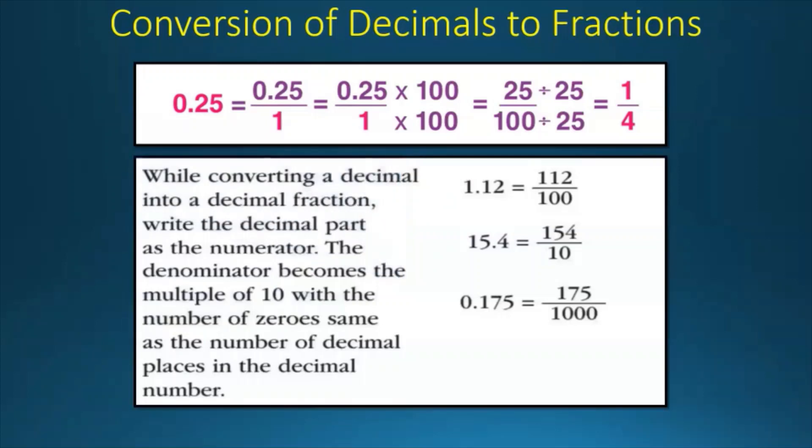Now while converting a decimal into a decimal fraction, we have to write the decimal part as a numerator. The denominator becomes a multiple of 10 with the same number of zeros as the number of decimal places in the decimal number. For example, 1.12 is a decimal we will convert to 112 by 100. 11.54 is equal to 1154 by 100, and 0.175 is 175 by 1000.